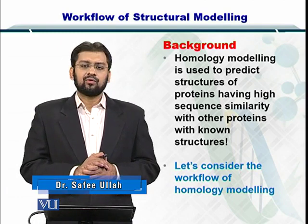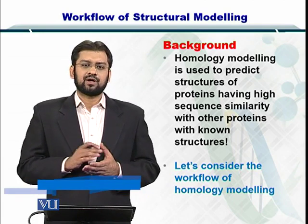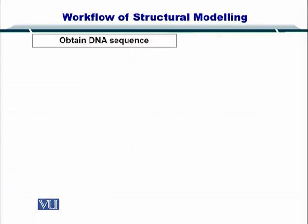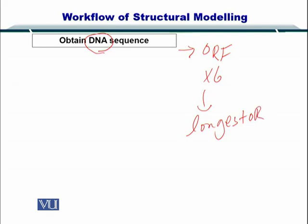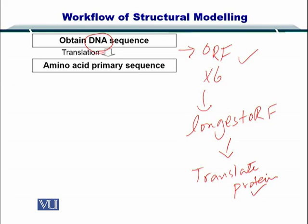So let's consider how the workflow or the flowchart of homology modeling works. First of all, you need to start with finding the DNA sequence. Once you have the DNA sequence, then you can find the ORFs. As you know, there are 6 possible ORFs. And then you find the longest ORF which is then used to translate the protein. By looking at the ORFs and then the translation process, you can come up with the amino acid sequence or the primary sequence.